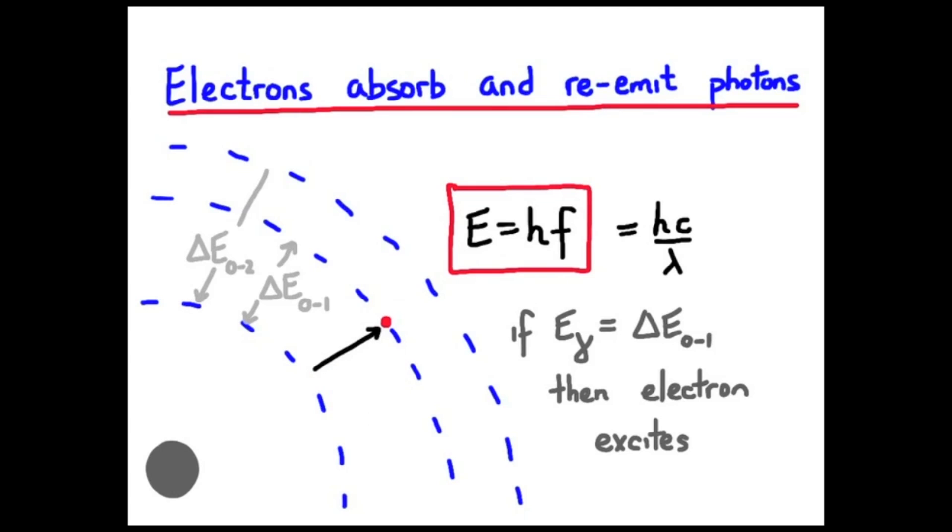In this case, it hops up to the next energy level. But it won't stay long before de-exciting and coming back down to that ground state. And in the process, it will also emit a photon. This is how light interacts with matter.